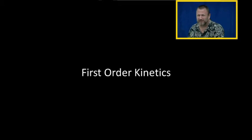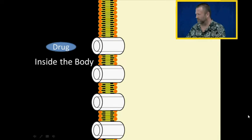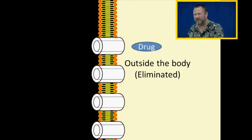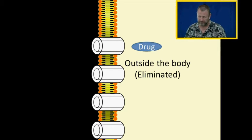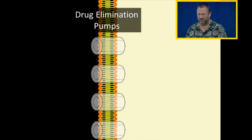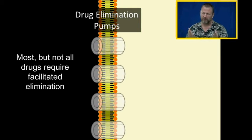Let's talk about first-order kinetics. This is my drug inside of the body, just to show you where the cartoons are coming from. This is the drug outside of the body, so the drug has been eliminated. These are my drug elimination pumps. For drug to be eliminated, it has to be actively moved — facilitated transport, just like when we brought nutrients into the cell. To get the drugs out of the body, there has to be facilitation using pumps.